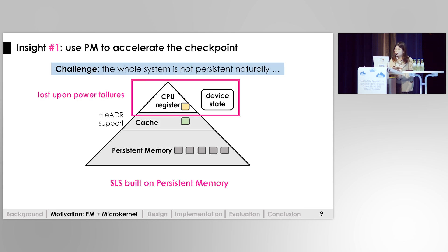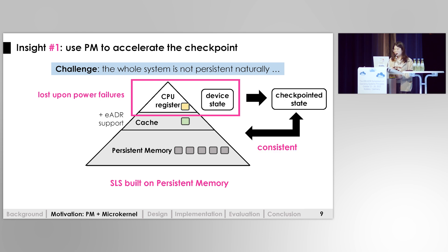Unfortunately, putting all system state on persistent memory does not make the whole system persist naturally. This is caused by the limited persistent domain. Even with EADR support, which persists cache after the system crashes, some states like CPU registers and device states can still be lost upon power failure. As a result, we still need a checkpoint-based method to checkpoint the volatile state and ensure there is a consistent checkpoint of the whole system.